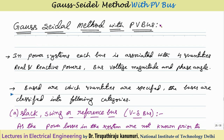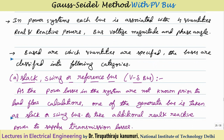Today we are going to discuss Gauss Seidel method with PV bus. In power systems, each bus is associated with four quantities: the real and reactive powers, the bus voltage magnitude and the phase angle. Out of these four quantities, two quantities will be mentioned for each bus type - for a load bus P and Q are mentioned, and for a generator bus the active power and voltage are mentioned. The remaining two variables must be calculated to complete the load flow analysis.